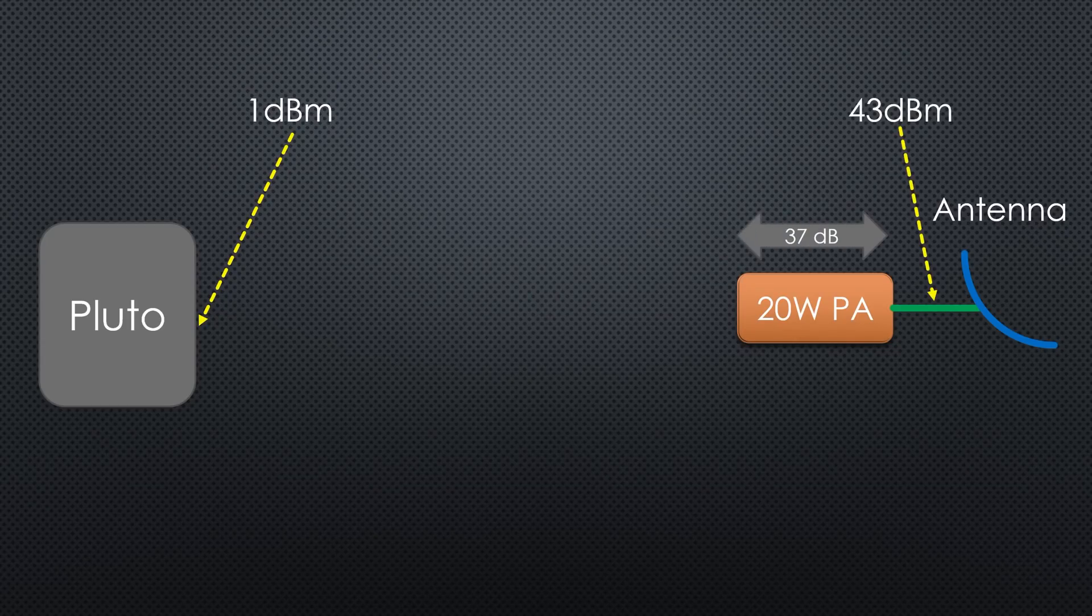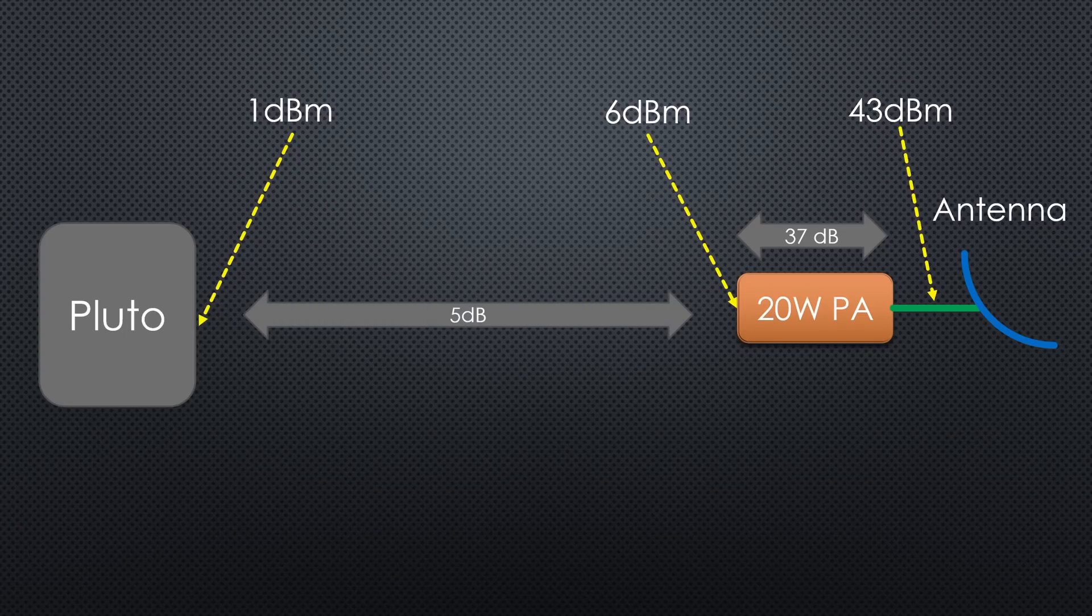We can calculate the input power needed to reach the 20 watts. 43 dBm minus 37 dB equals 6 dBm. So we search for an amplifier with a gain of at least 6 dBm minus 1 dBm equals 5 dB. And an output power of 6 dBm.